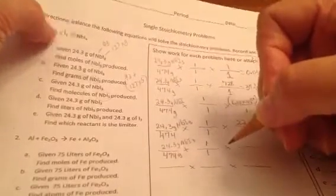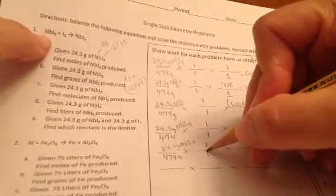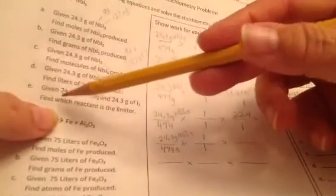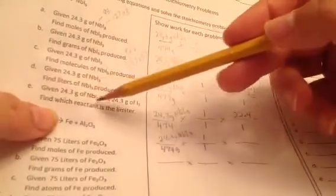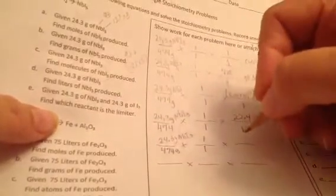Its coefficient is 1 over the coefficient of what I've been given, which is the 1 for the NBI3. Now, what units do you want to solve this for? This just says find which reactant is the limiter, which quite frankly means I get to choose what units.